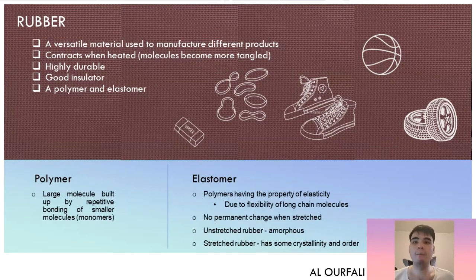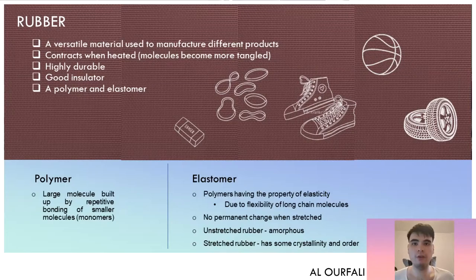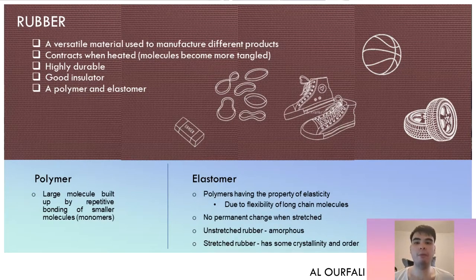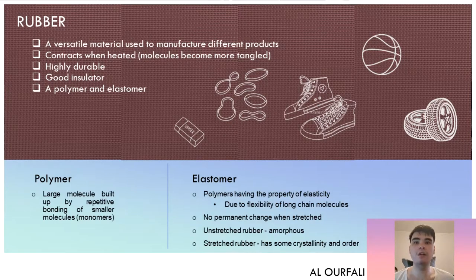A polymer is a large molecule built by repetitive bonding of smaller molecules called monomers. An elastomer is a polymer having the property of elasticity due to the flexibility of long chain molecules, with no permanent deformation when stretched.